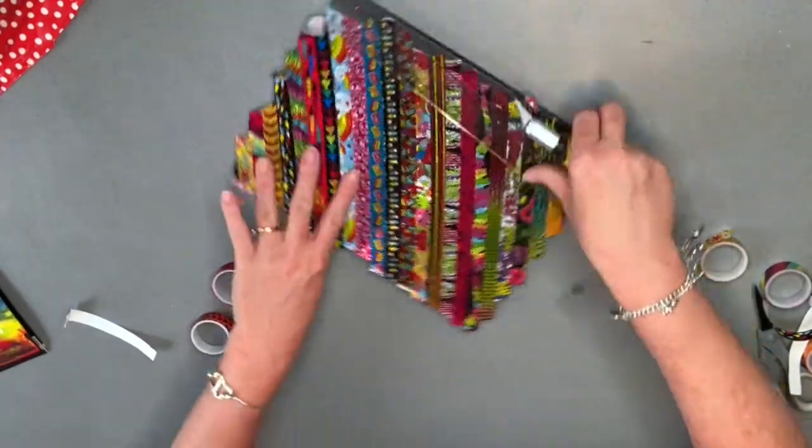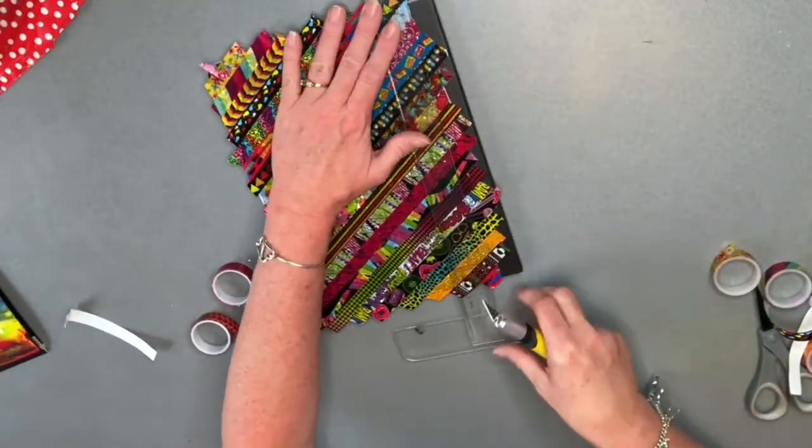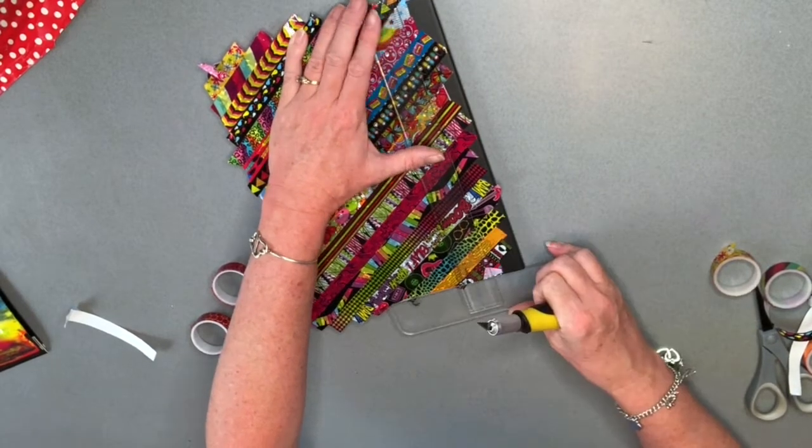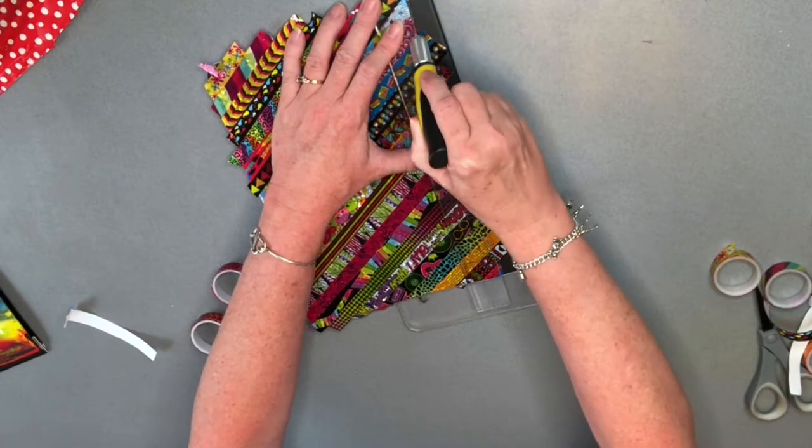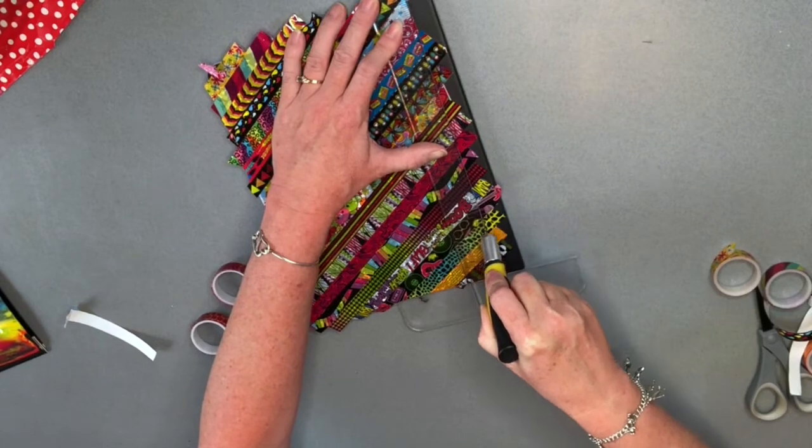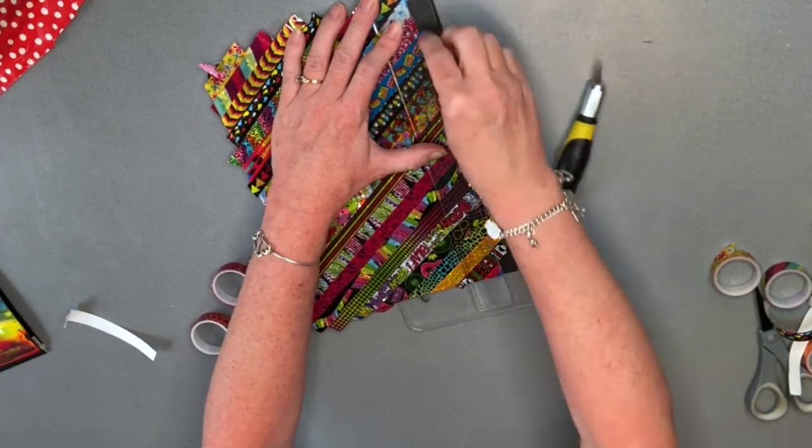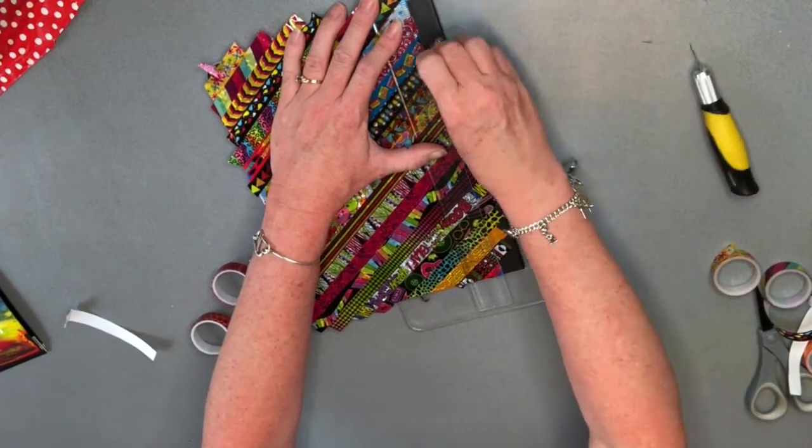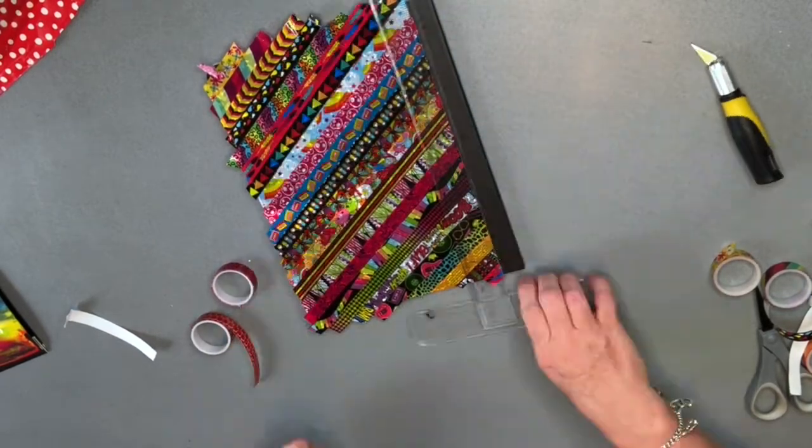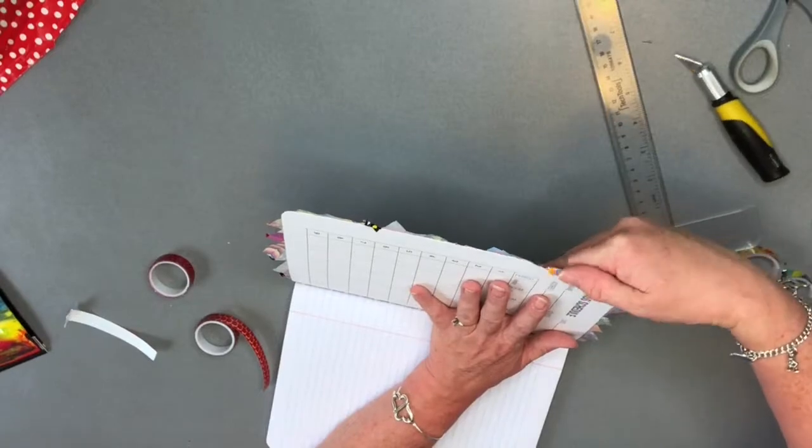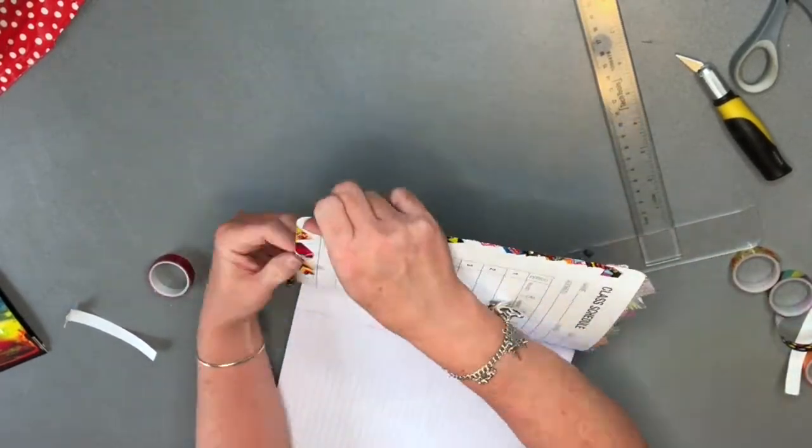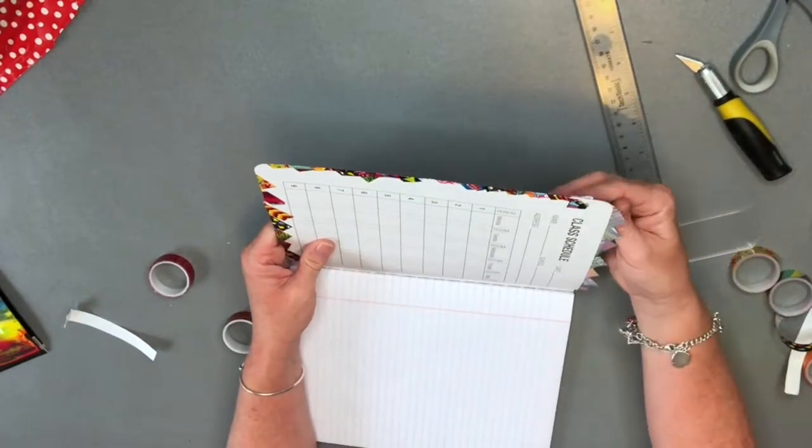Now I'm going to take my craft knife and a ruler, and I'm going to go along this edge, pretty it all up. I'm just going to go very lightly so that I cut the tapes, but not the binding, not the composition book. And then I can pull all those off. We have a nice clean edge. If you don't mind the look, you can just fold them over. If you want a clean look, you can just cut them with your scissors.